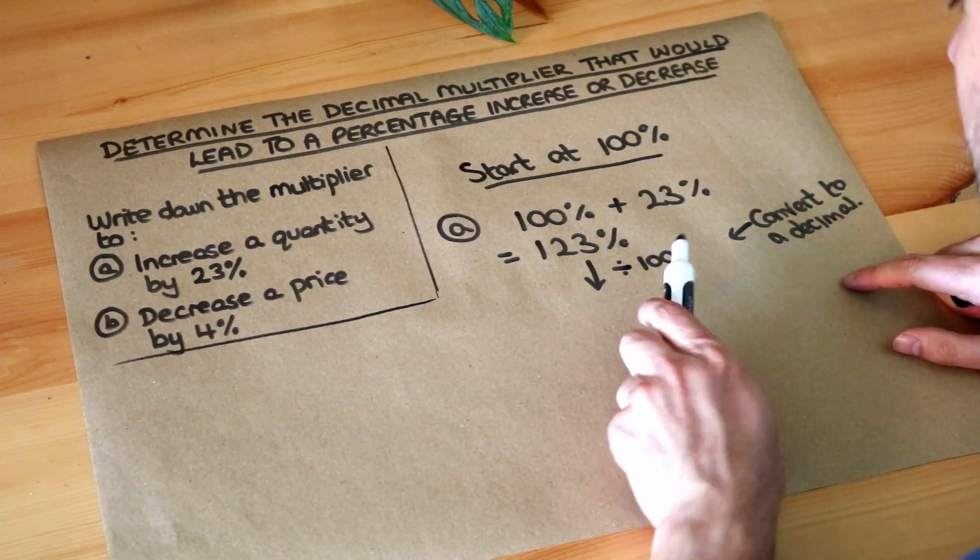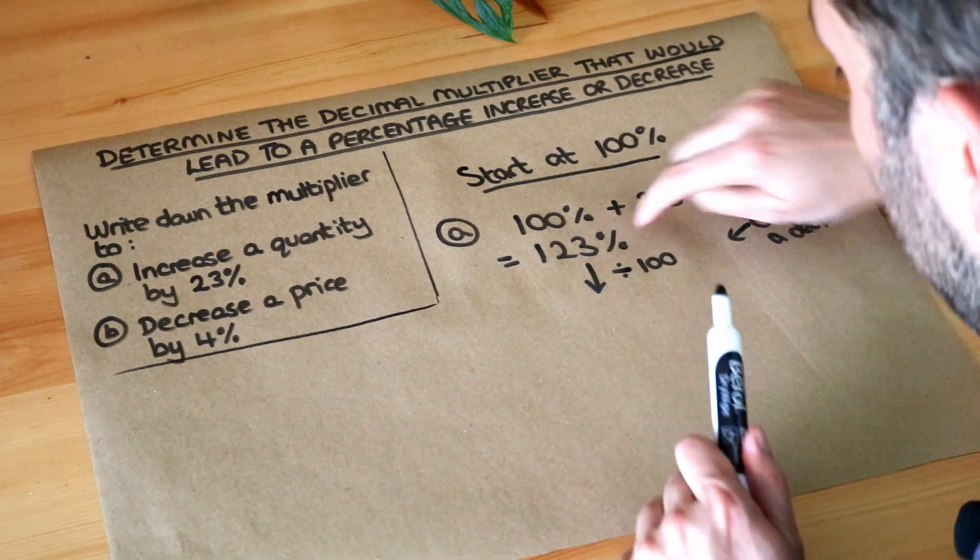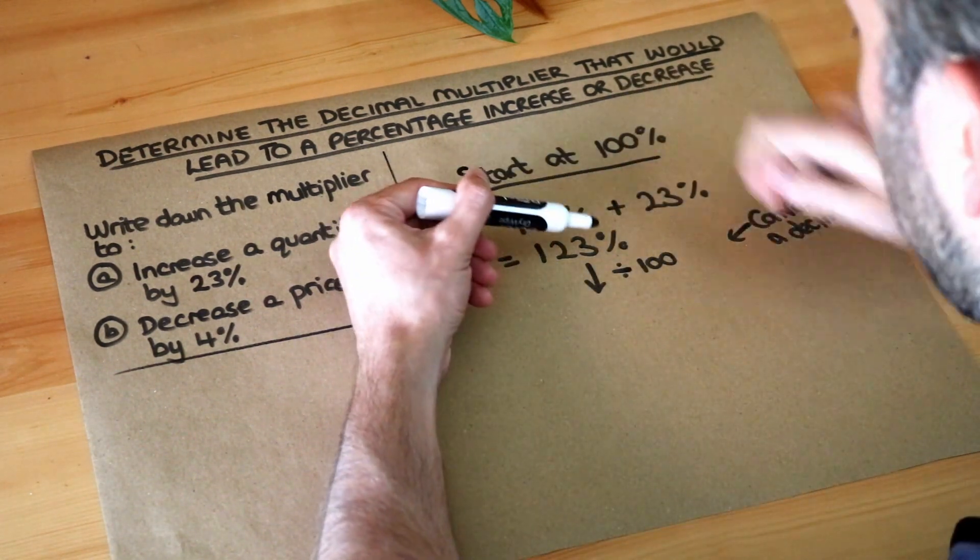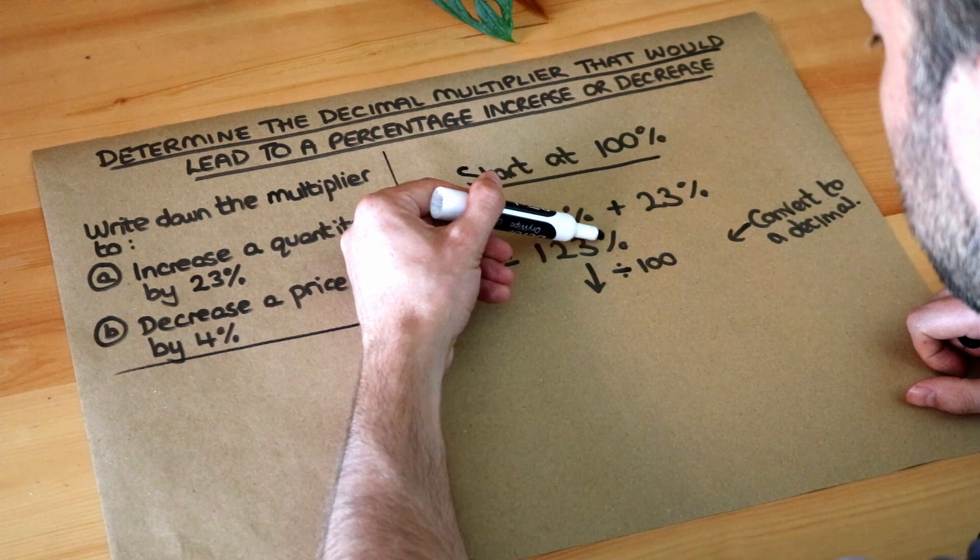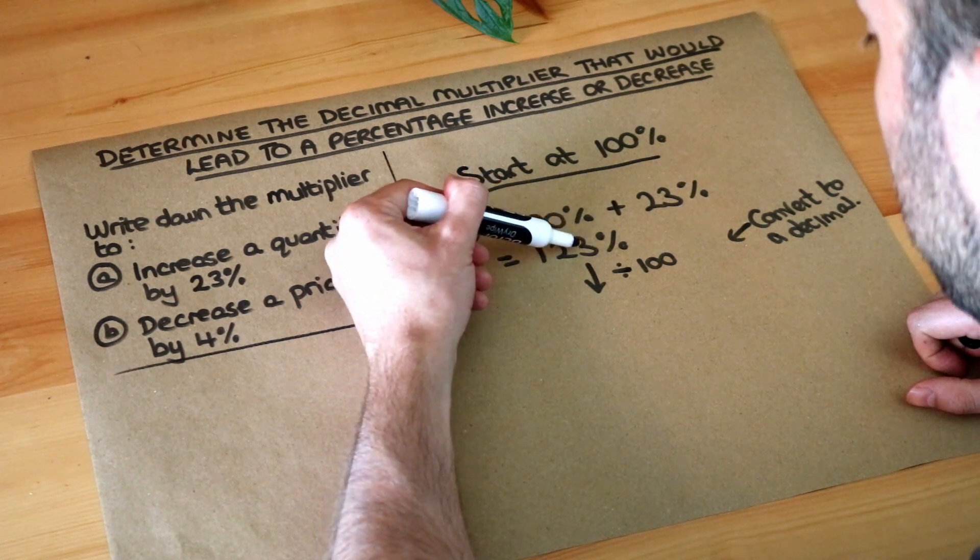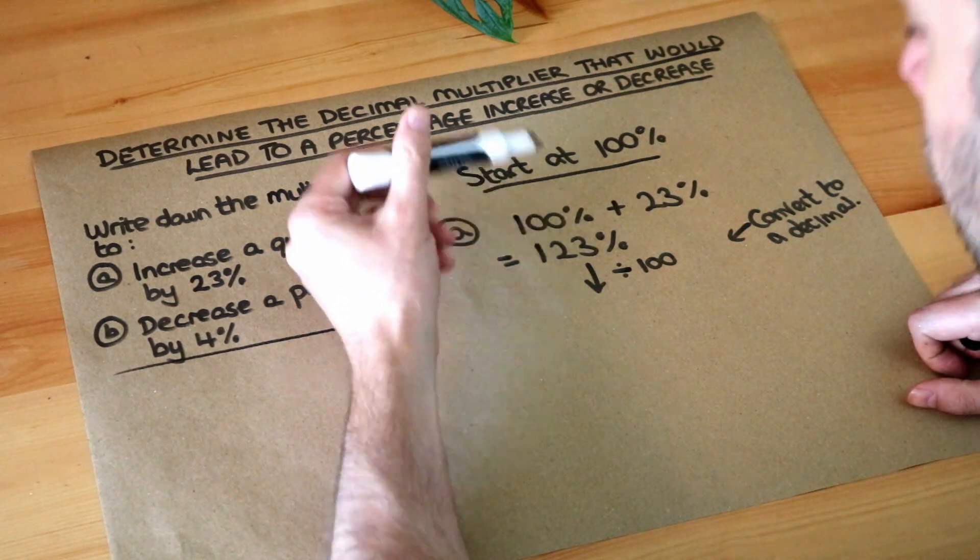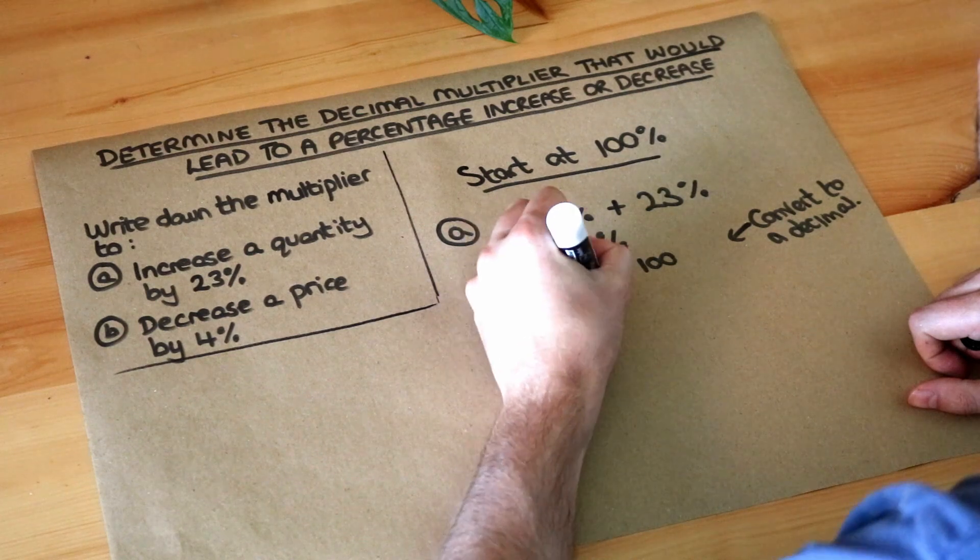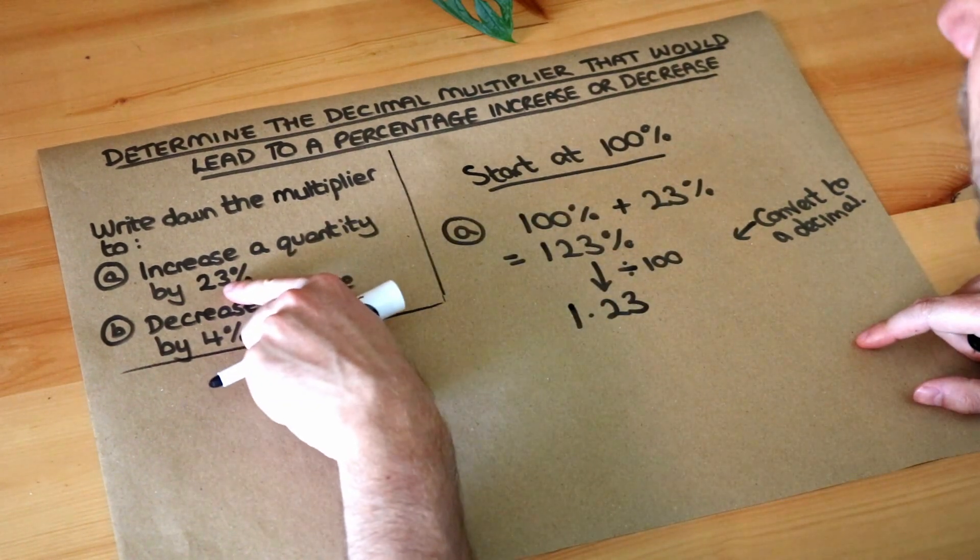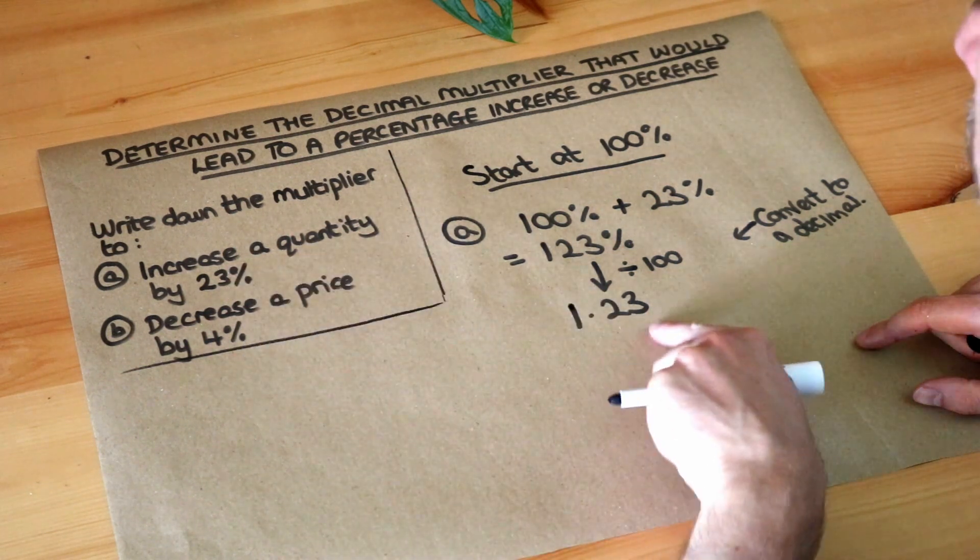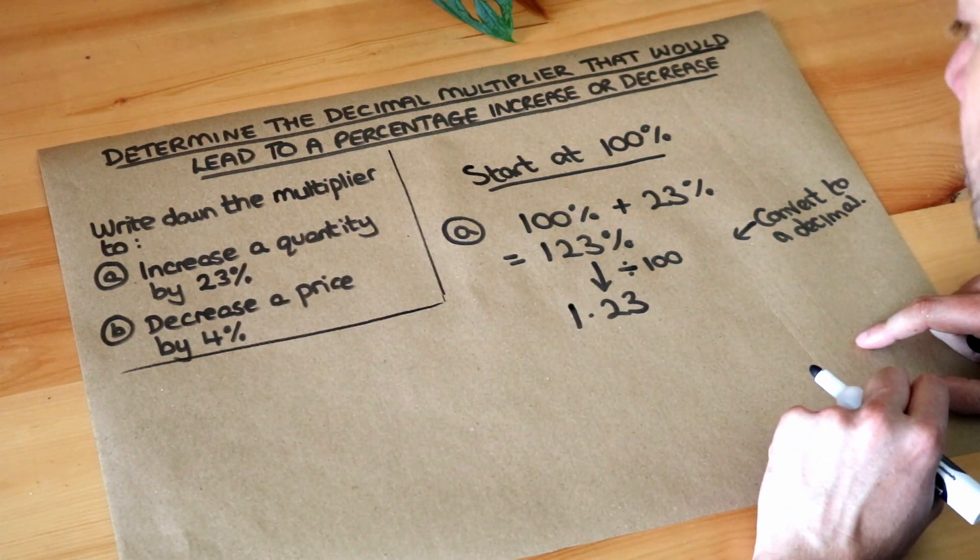So when we divide by 100, the decimal place at the moment is here, just after the 3. And when we divide by 100, it's going to move two places to the left. So 1, 2. So we're going to get 1.23. So that means if you want to increase a quantity by 23%, you multiply the number by 1.23.